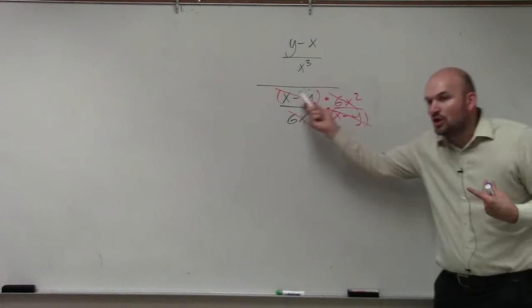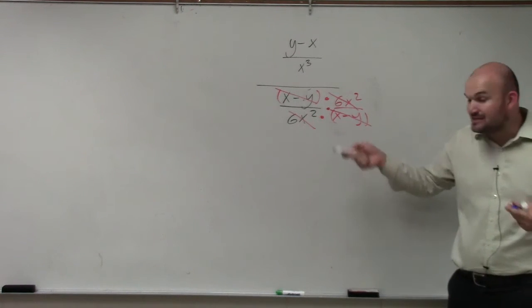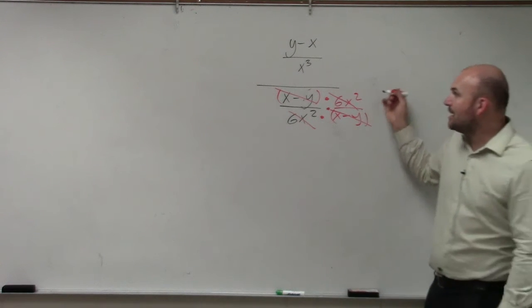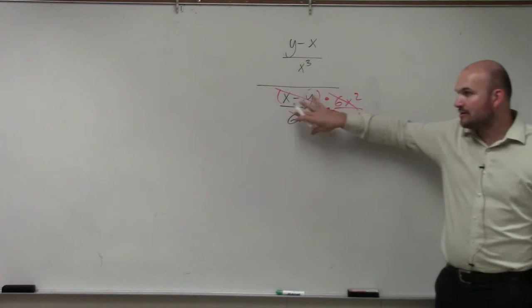So now, multiplying a fraction by its reciprocal, doesn't matter how crazy the fractions look, is automatically going to equal one. So now, however, our denominators go to one.